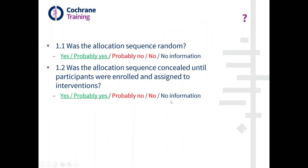We're going to begin by focusing on the first two signalling questions, as the answers to these are often found together in trial reports. We're going to look at whether we think that the allocation sequence was random, and whether we think that the allocation sequence was concealed until participants were enrolled and assigned to interventions.